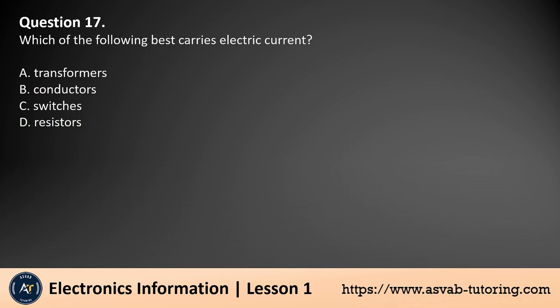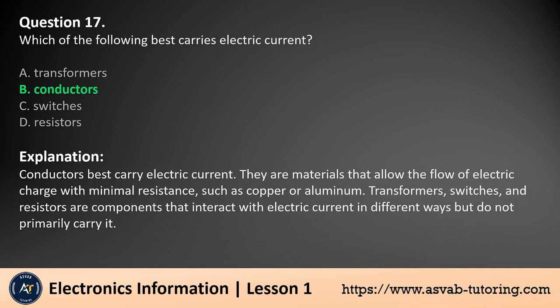Question 17. Which of the following best carries electric current? a. Transformers, b. Conductors, c. Switches, d. Resistors. The answer is b. Conductors best carry electric current. They are materials that allow the flow of electric charge with minimal resistance, such as copper or aluminum. Transformers, switches, and resistors are components that interact with electric current in different ways but do not primarily carry it.